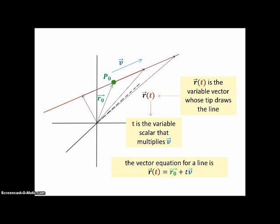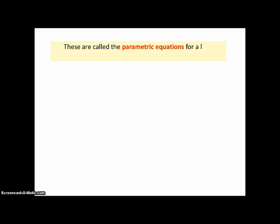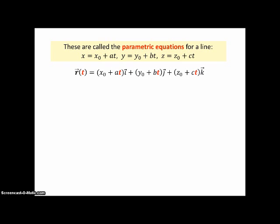Recall from a previous lesson that we showed how a vector-valued function could define a line. The black vectors are the variable vectors. The vector-valued function evaluated at some real number t equals the fixed vector r-naught plus multiples of vector v, which is parallel to the line. The parametric equations for a line come from the coefficients in front of r-naught and v. If we put these in front of i, j, and k, this is another way to write the vector-valued function. Notice each component is a linear function, so it's not a surprise that a line is drawn.